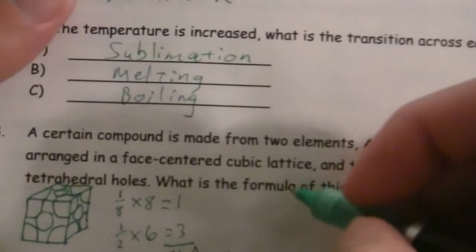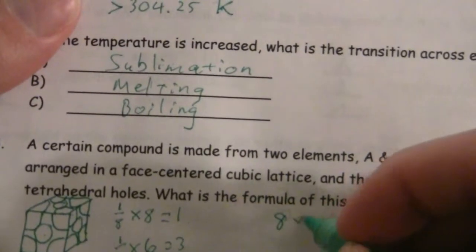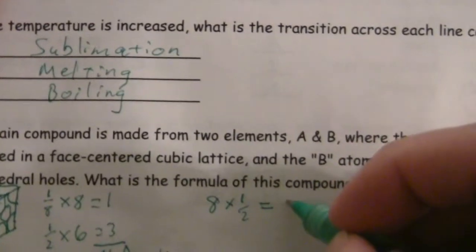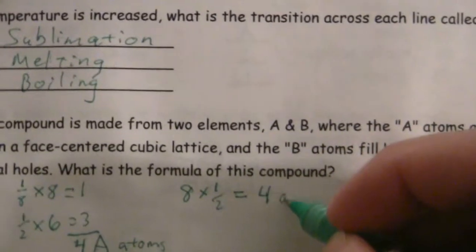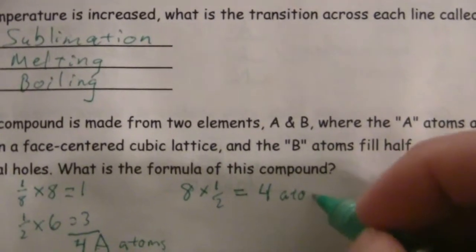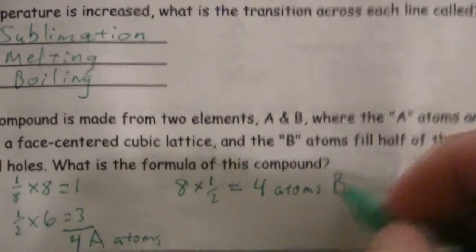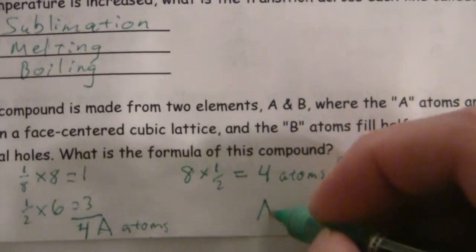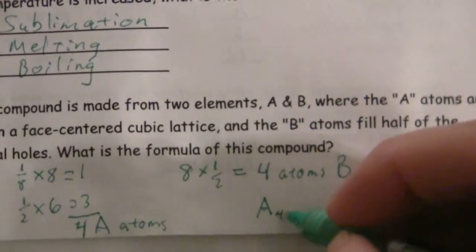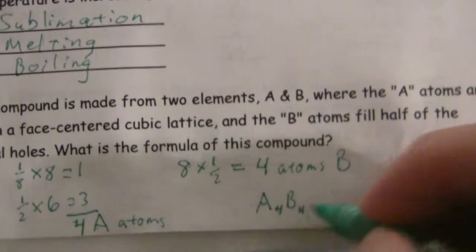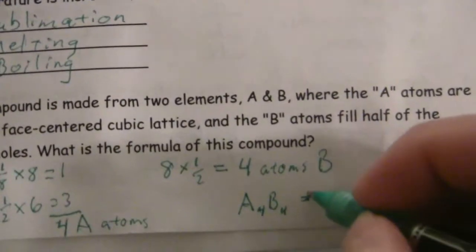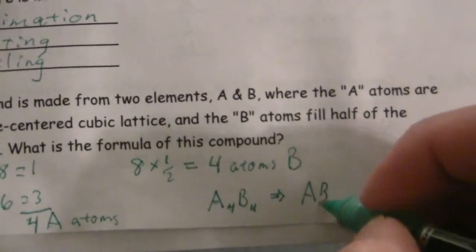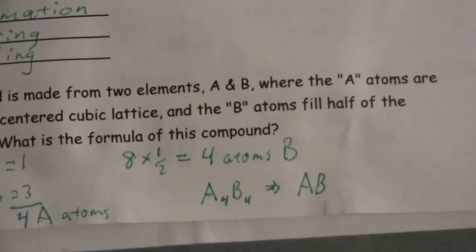So, if there are eight holes, and they are half filled, that gives us four atoms of B. So, four A atoms, four B atoms, our formula, you could say A4B4, but that would then reduce down to AB. And I'll do it again.